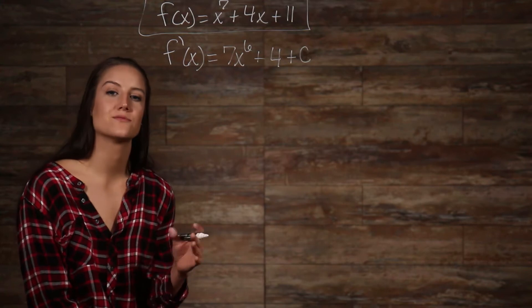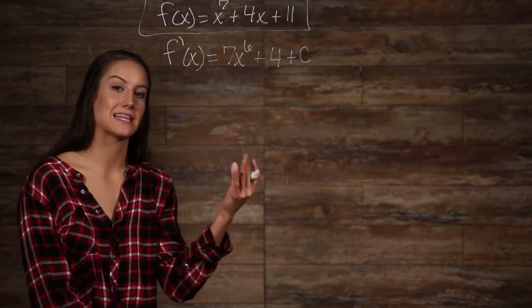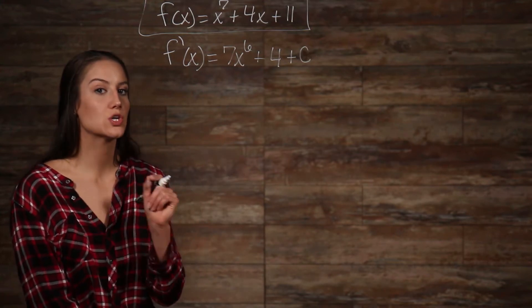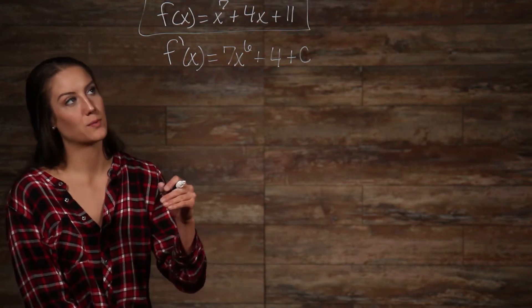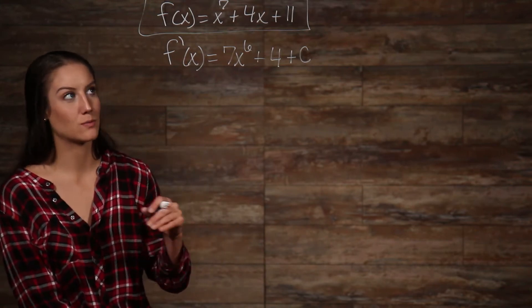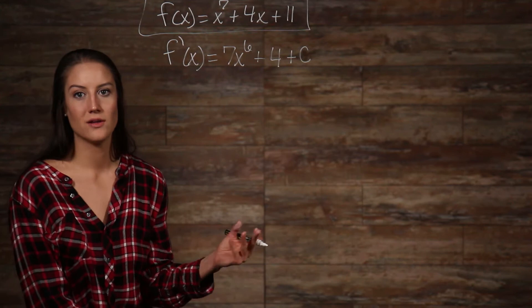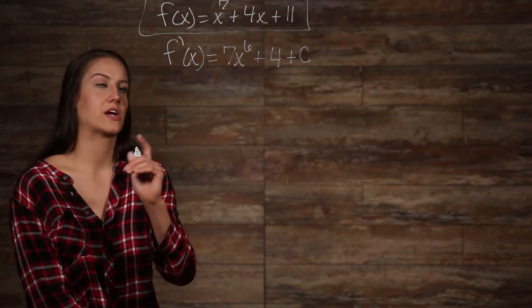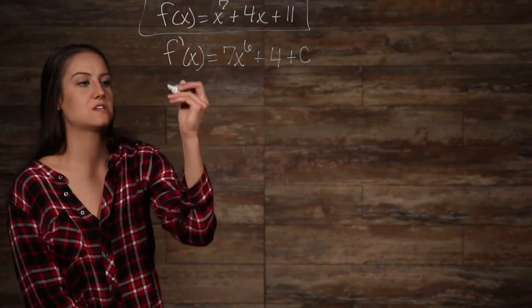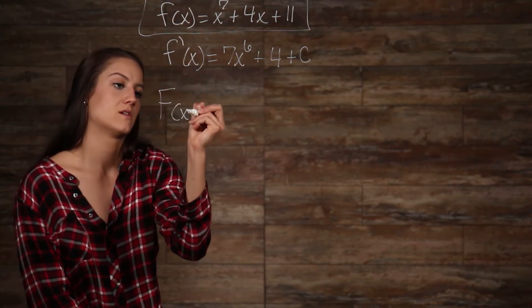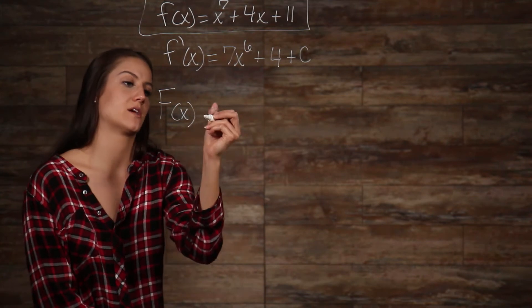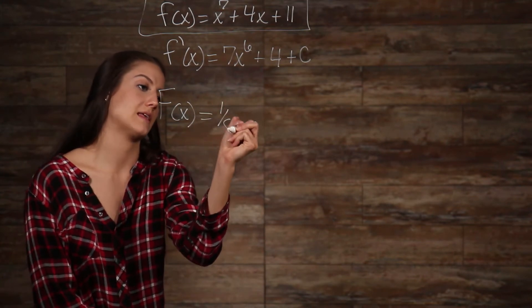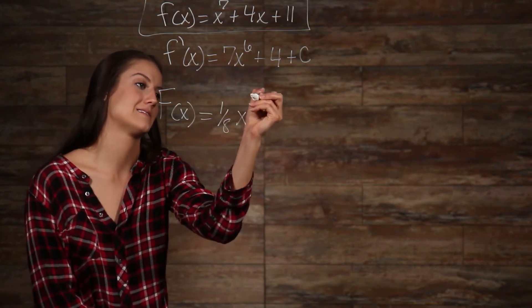Well, we know that our original exponent was eight. So, that would give us x to the eighth. But, we also know that when we took the derivative and brought it down, we multiplied it times the base, and whatever we multiplied by canceled out. So, we know that there is a one-eighth in the coefficient. So, our first term here, and I'm going to write this before the derivative was taken as big F, and our original term here is going to be one-eighth x to the eighth.